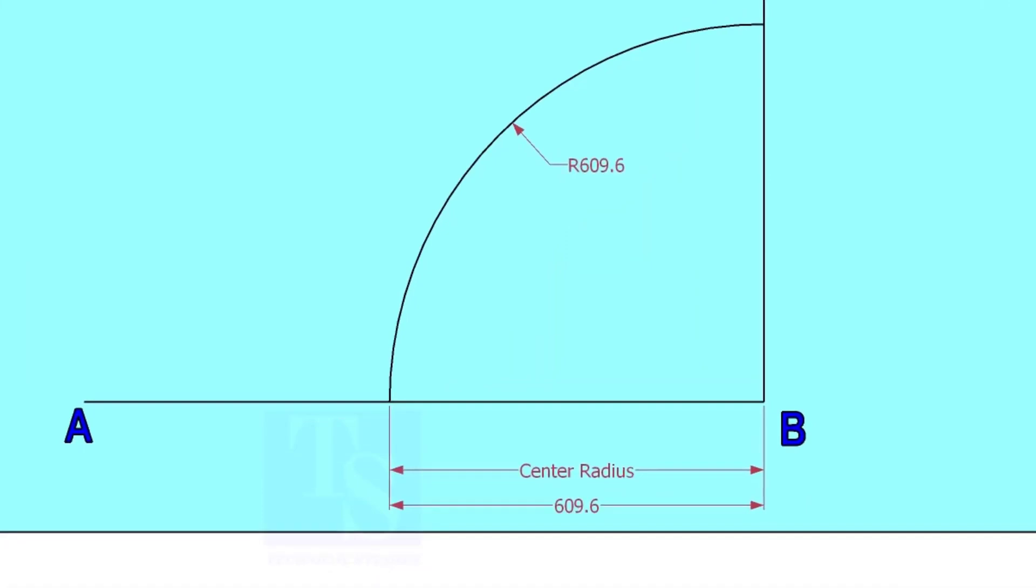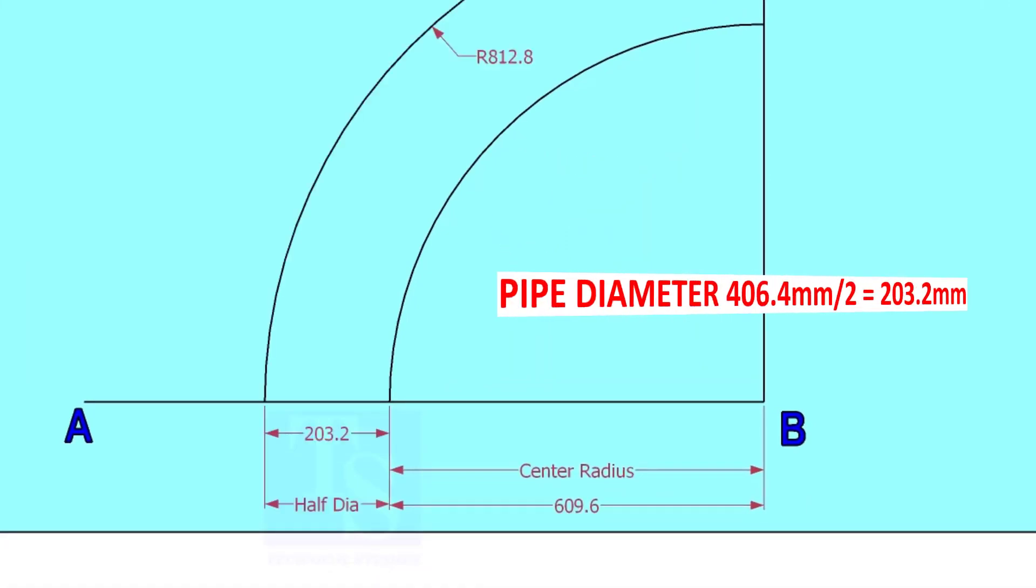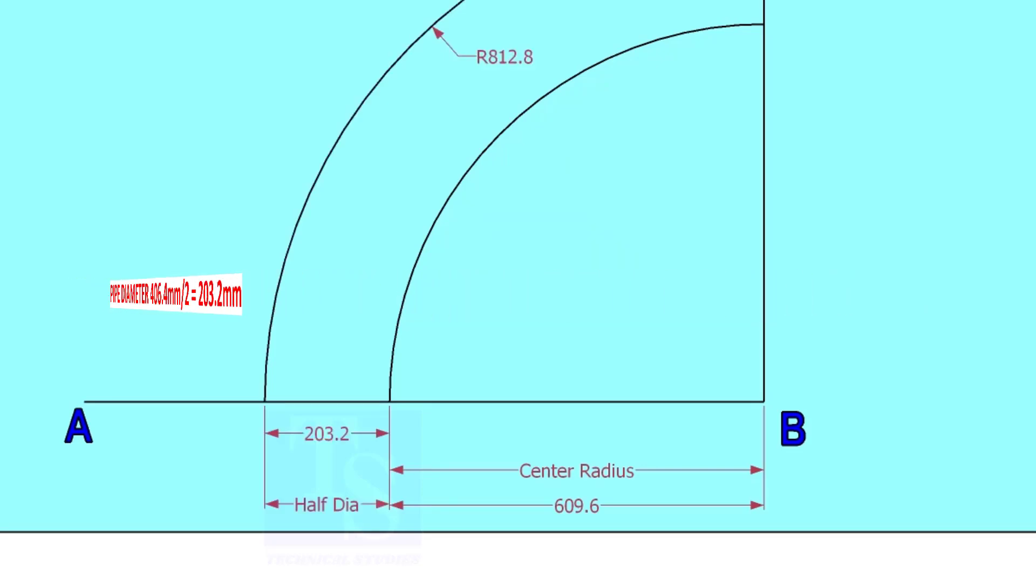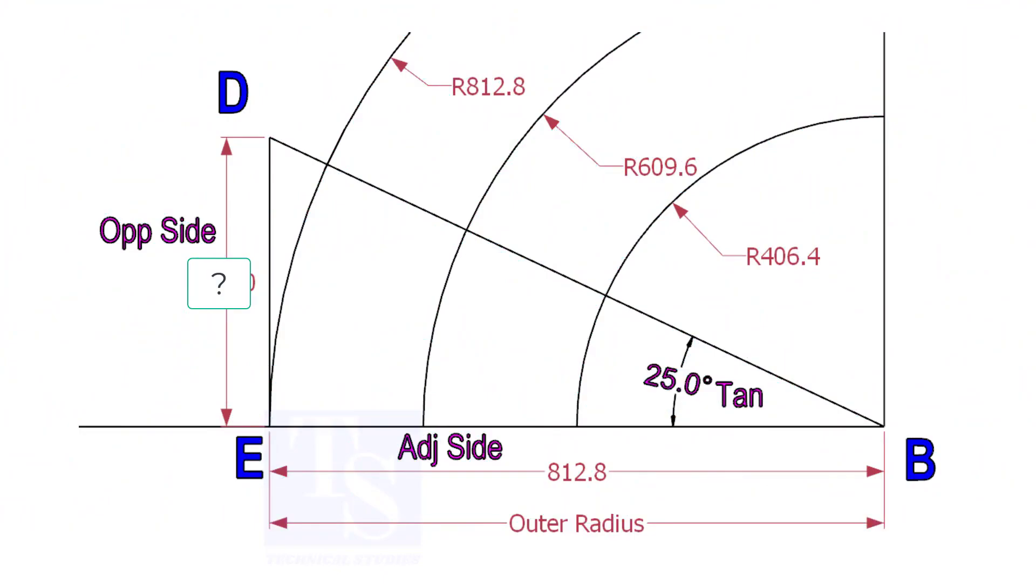Draw an arc with the center radius 609.6 millimeters. Mark the half OD arcs on both sides of the center line. Mark a line 25-degree rotated from the base line AB.